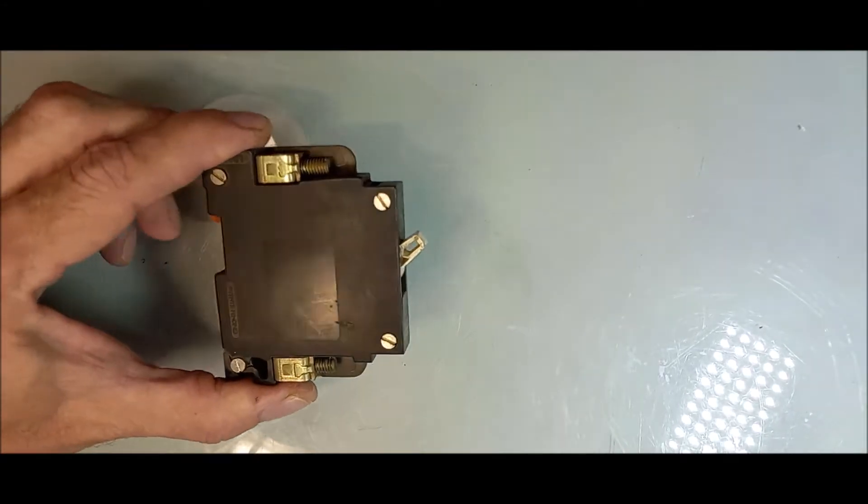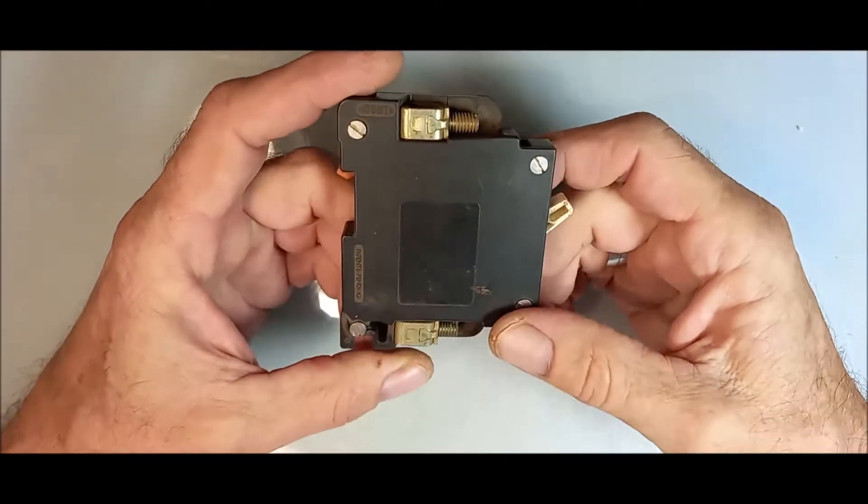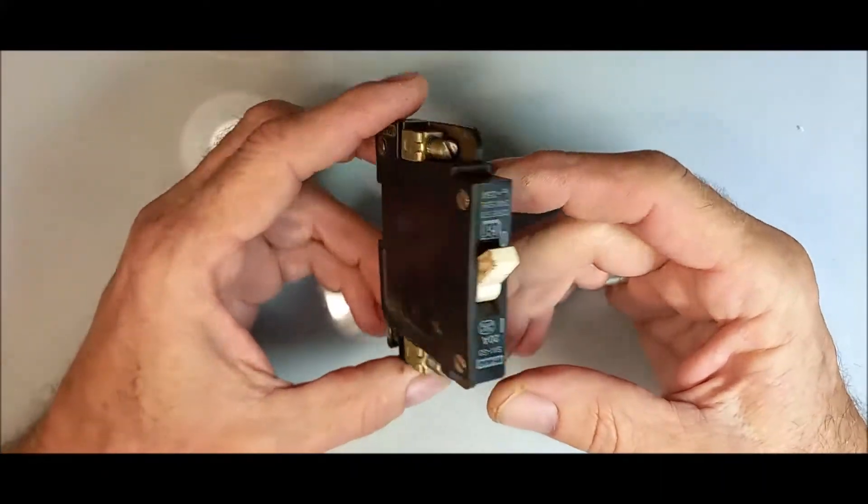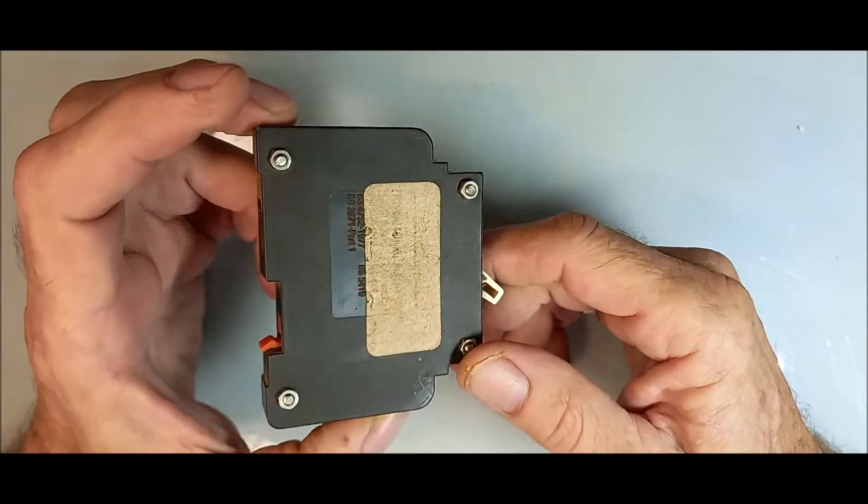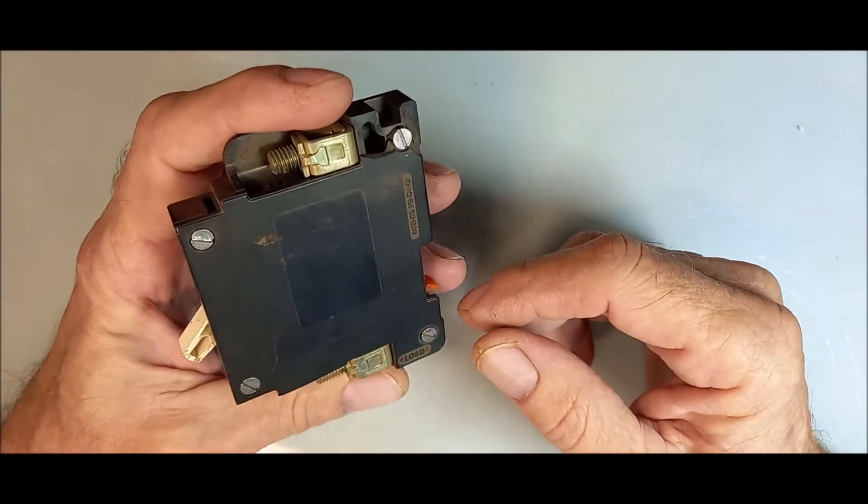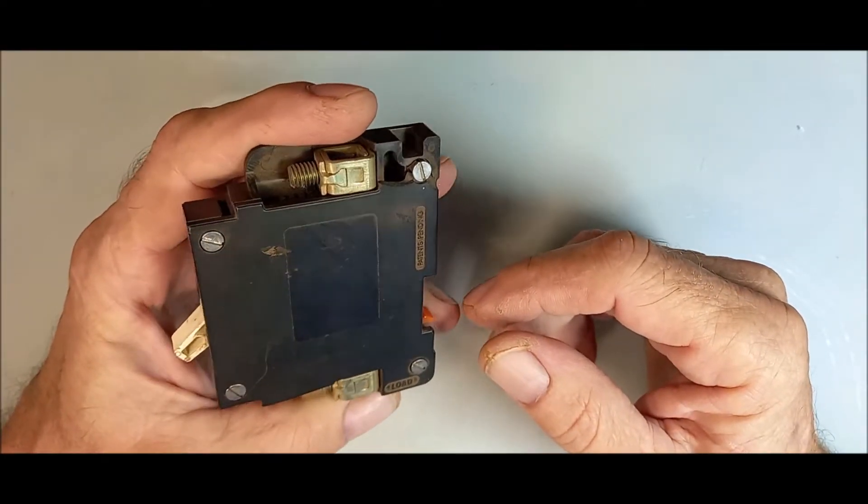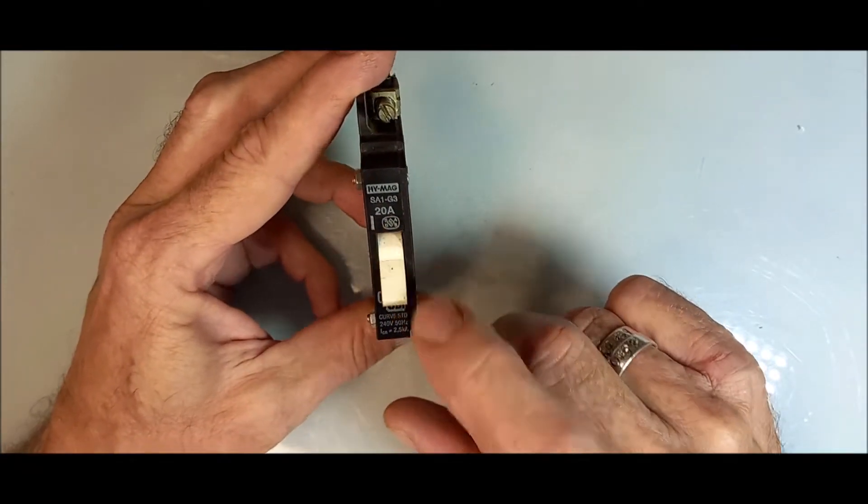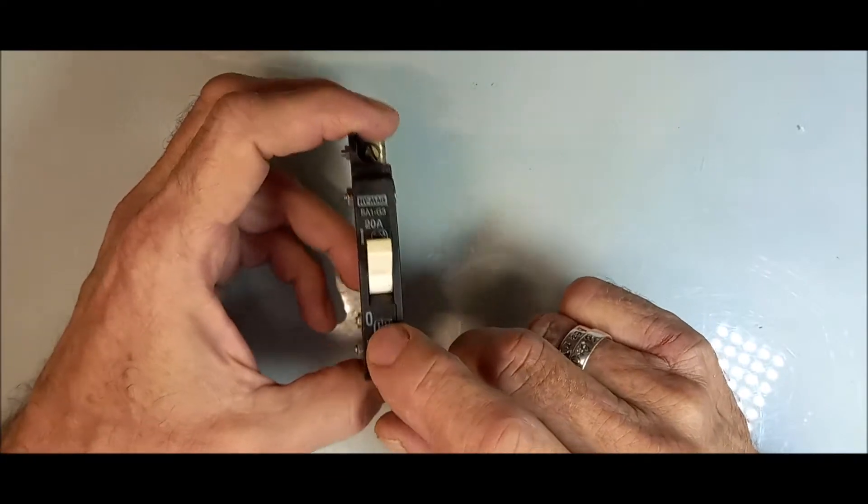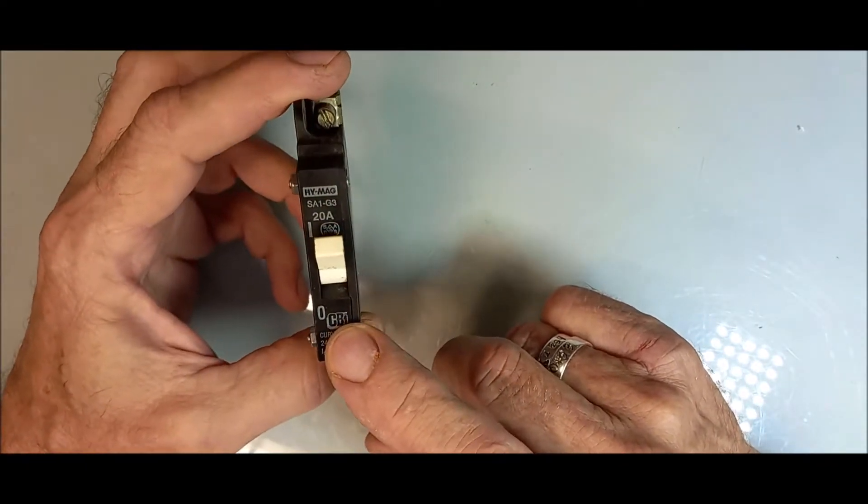Hello and welcome to my channel. Today we can have a look at a normal trip switch, the workings inside of a normal trip switch you have in your house in your distribution box. This is a 20 amp CBI. You get different types of brands.